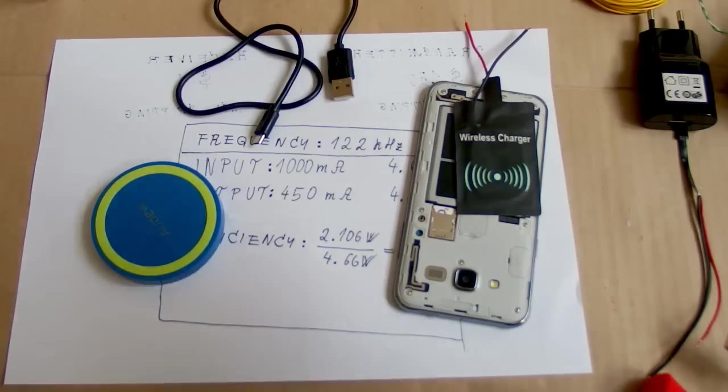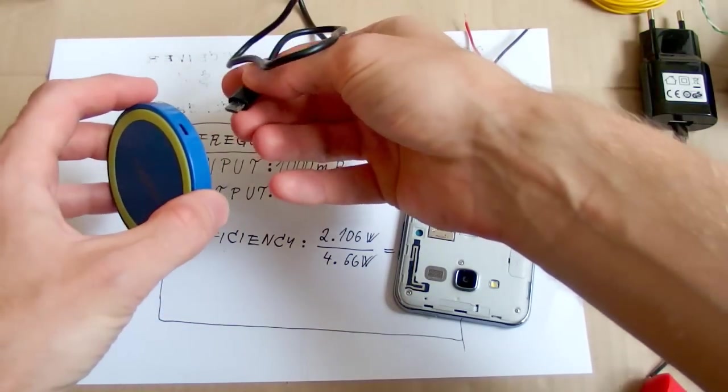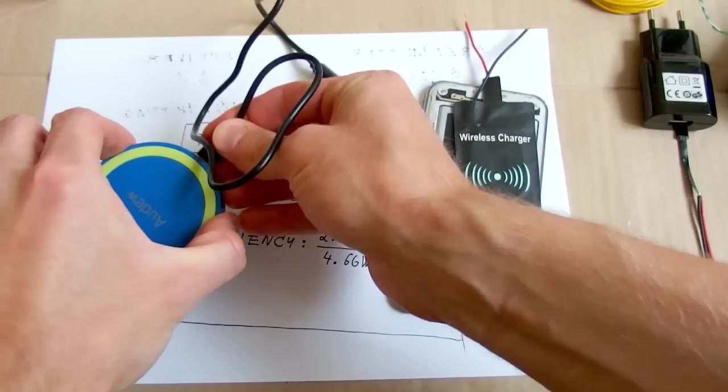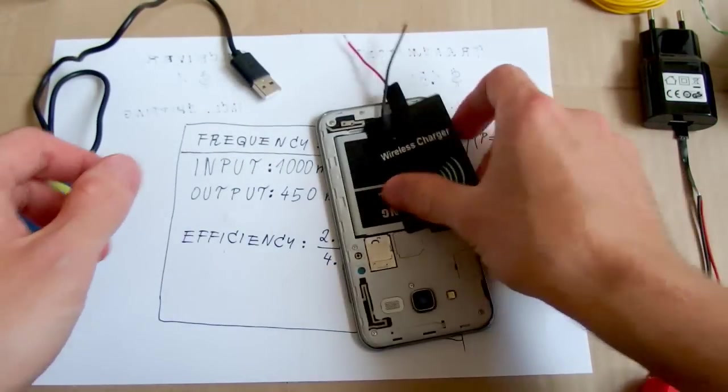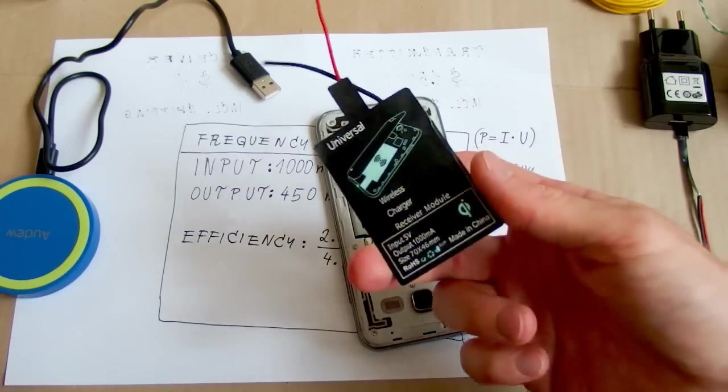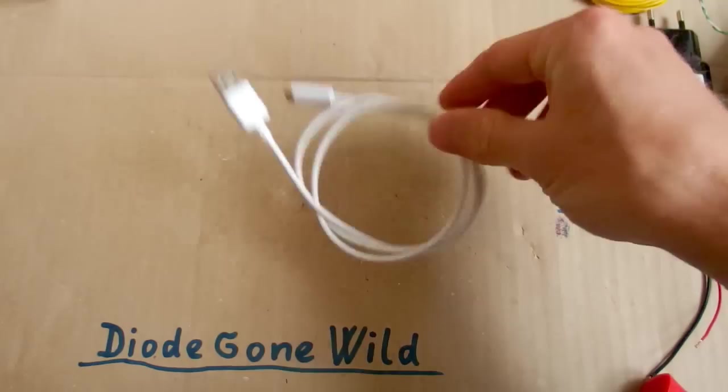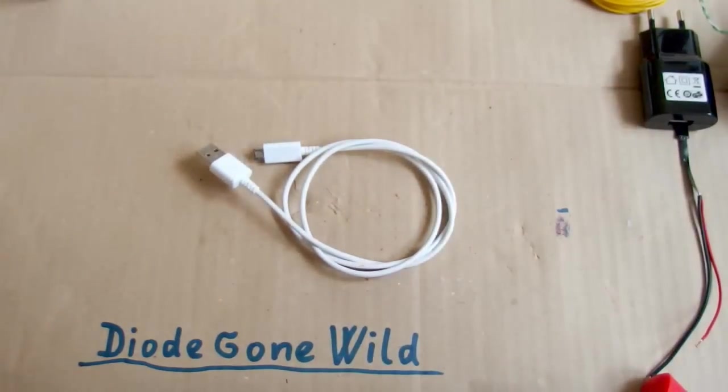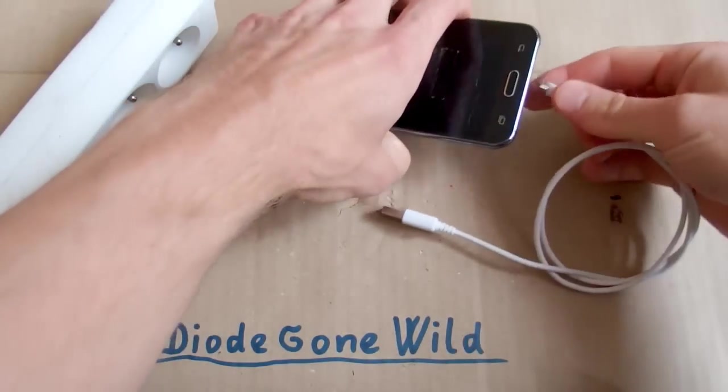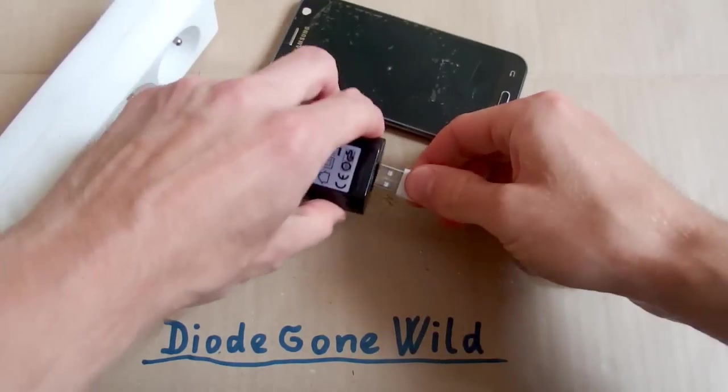So to sum it up, you have a transmitter, which you have to fix yourself before you are able to plug the cable in. And you have a receiver, which is going to set you on fire. I am not sure how you guys, but I am probably going to stick to my old school cable. So this is DiagonWild and see you in my next videos.